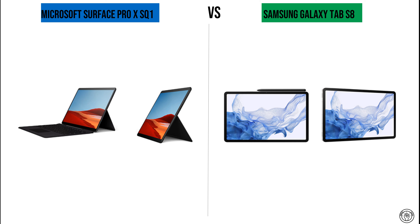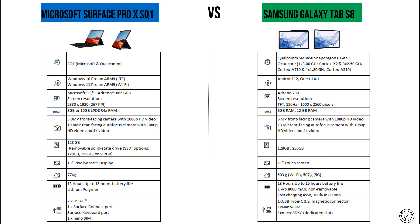First of all, about the processors: for the Microsoft Surface Pro X SQ1, it's the famous Microsoft and Qualcomm collaboration to develop the SQ1, which is an ARM-based chip also for Windows tablets. It is based on a Snapdragon 8cx but with higher locked CPU and GPU cores, with the CPU cores locked at up to 3 gigahertz.